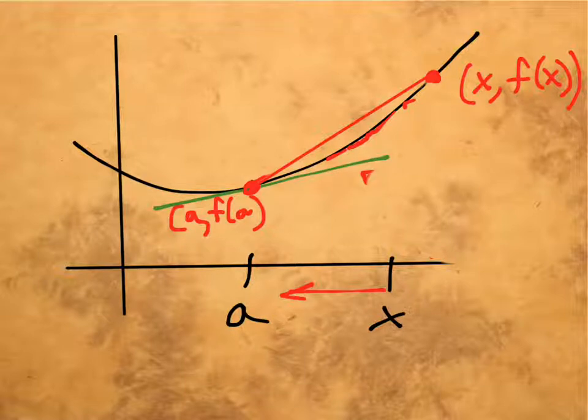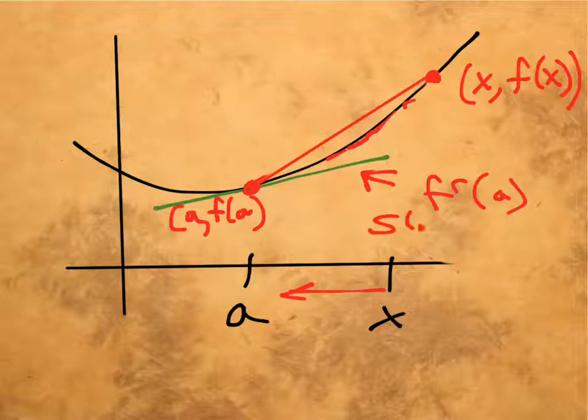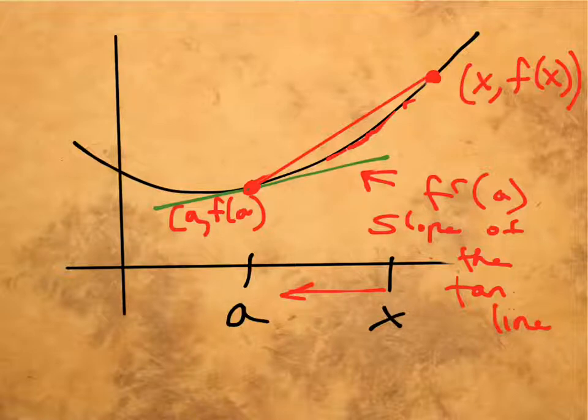The red becomes the green. And the value f prime of a that you are about to get is the slope of the tangent line. It will actually give you a numerical value at the rate of change.